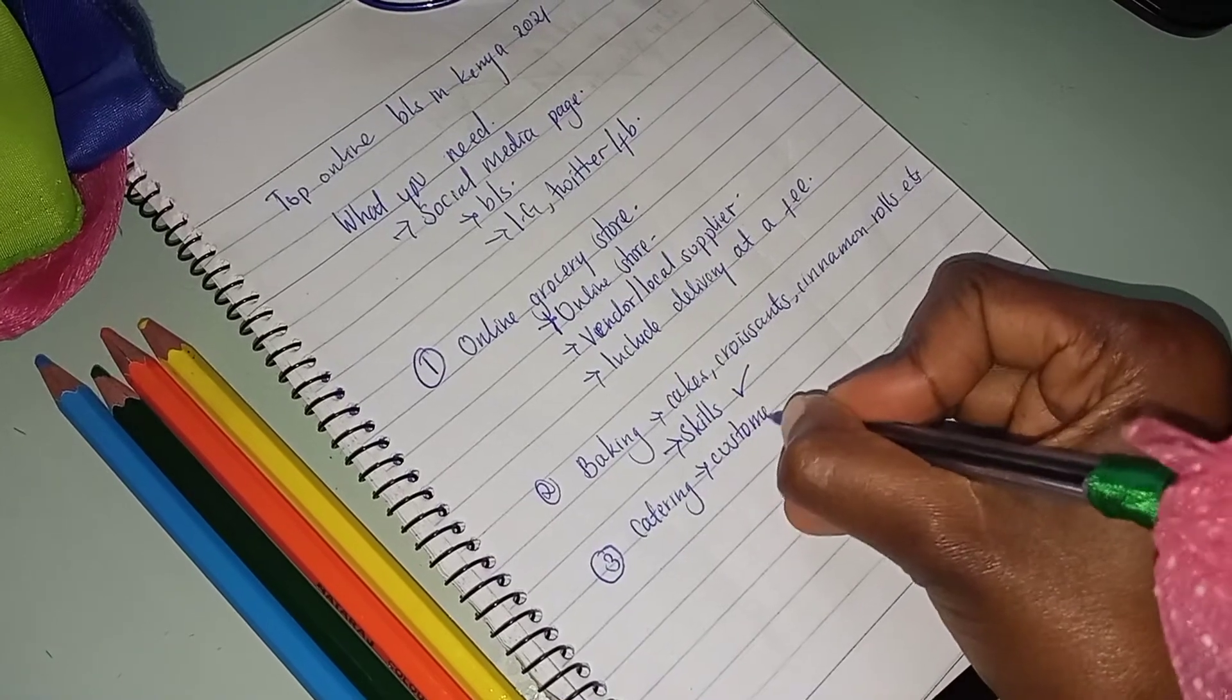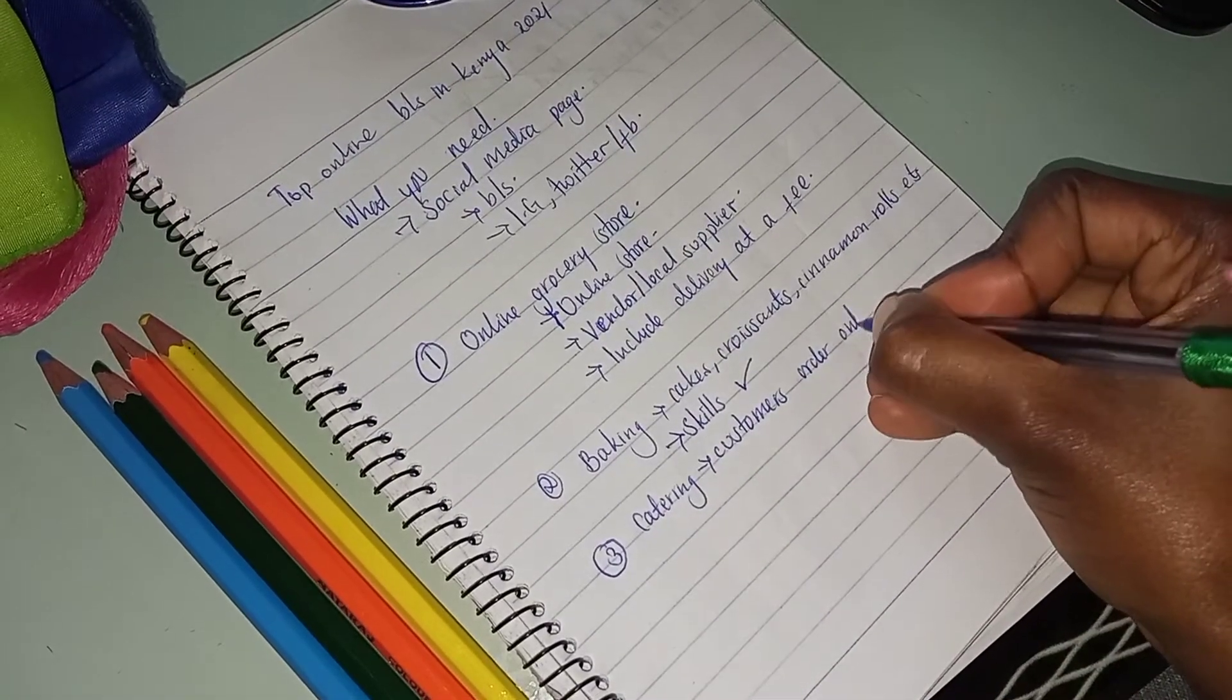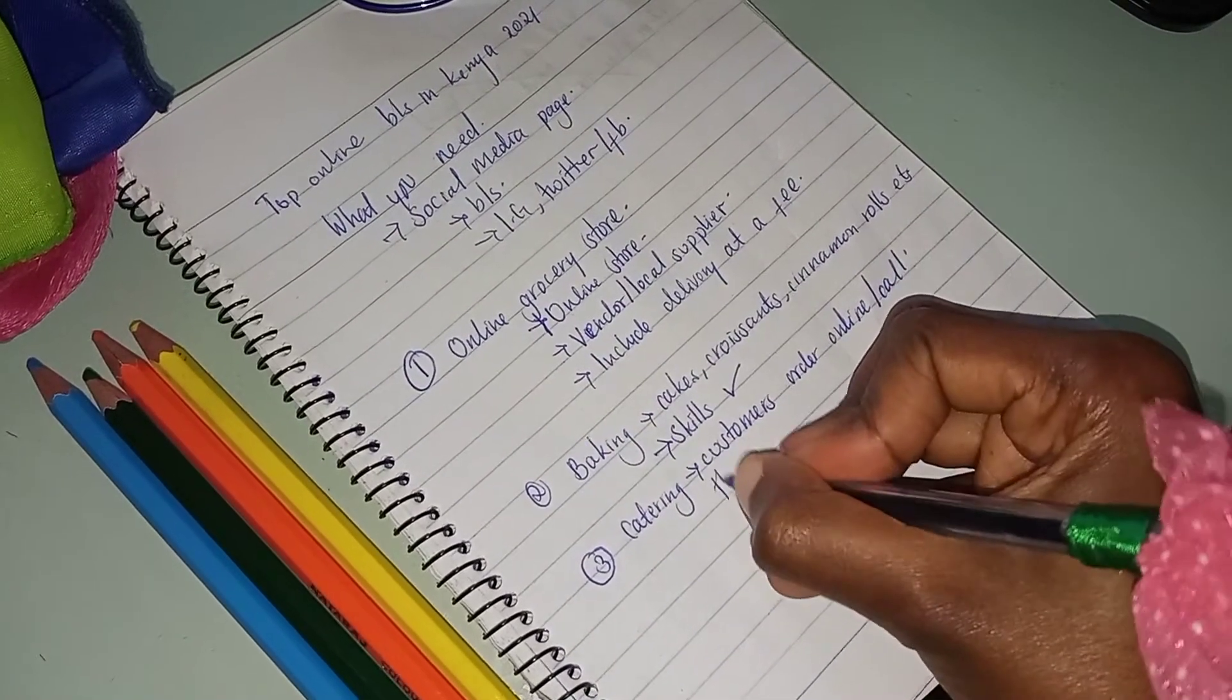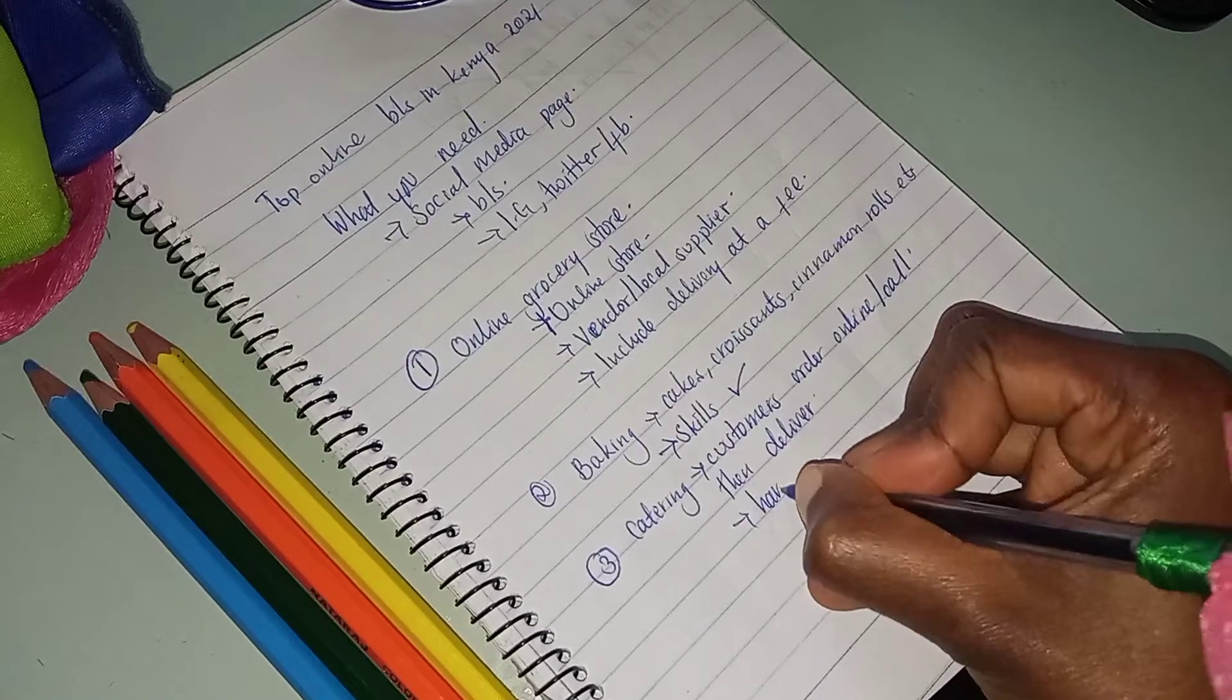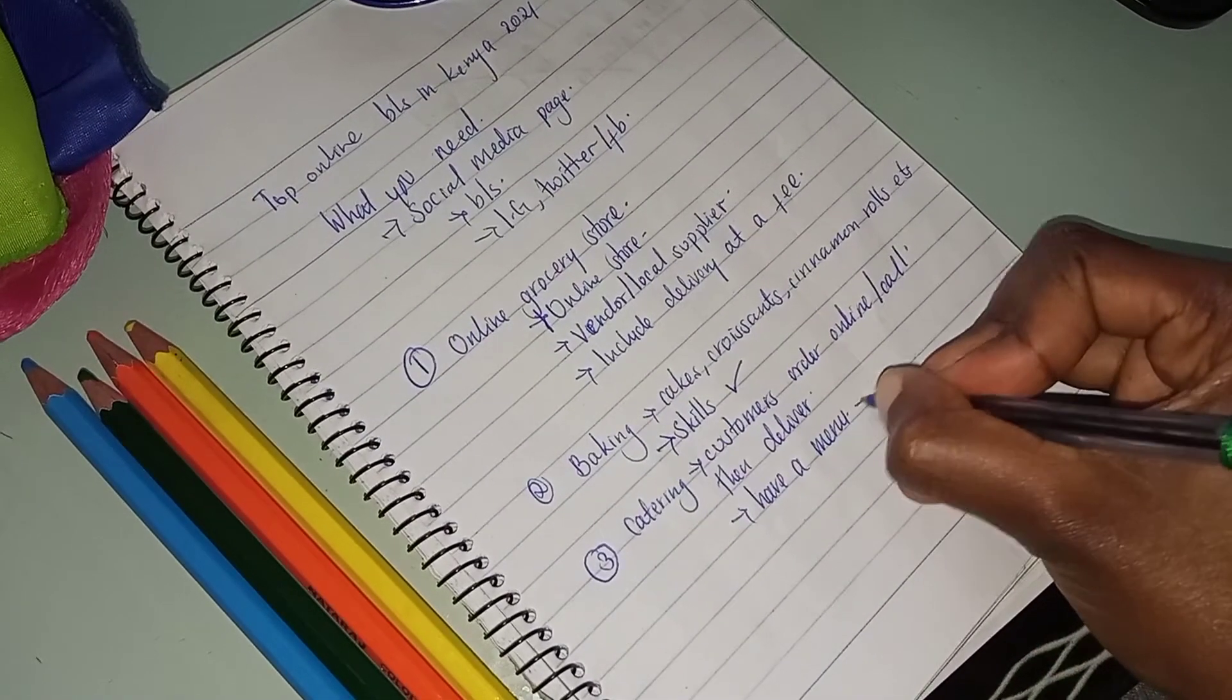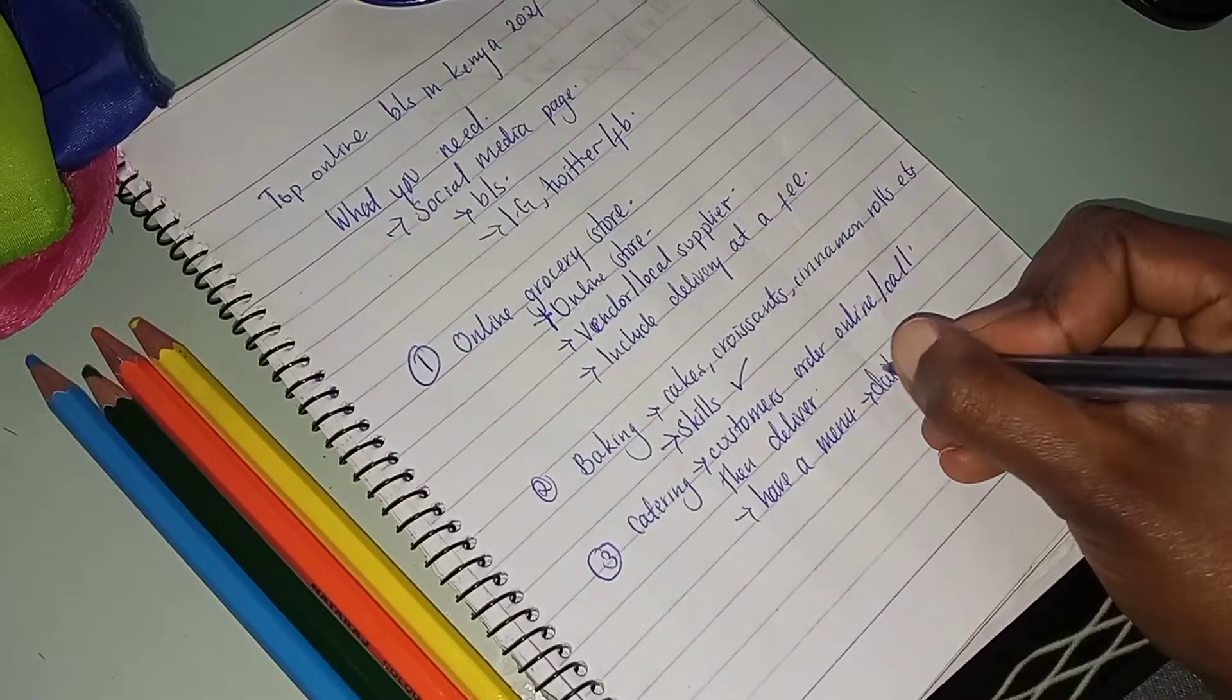So here it's when the customer orders online, they can call or just text you, and then you prep, cook and deliver. Note that you have to have a menu, either a daily one or a weekly one. You can also buy cereals, package them, then freeze them and sell them.